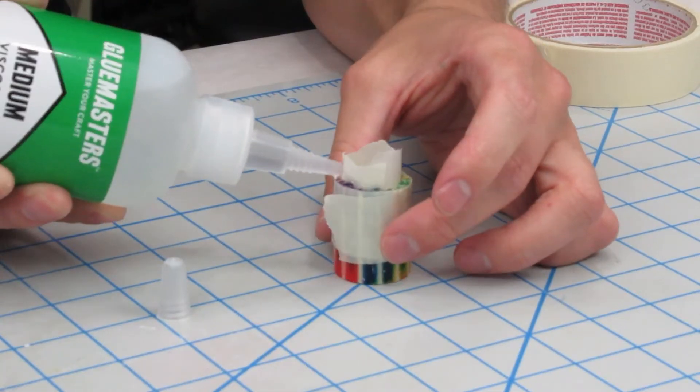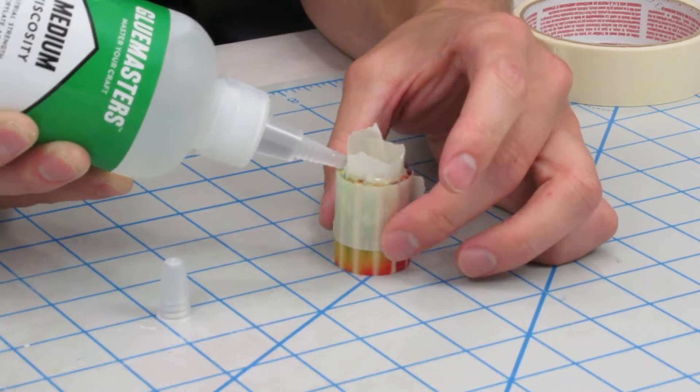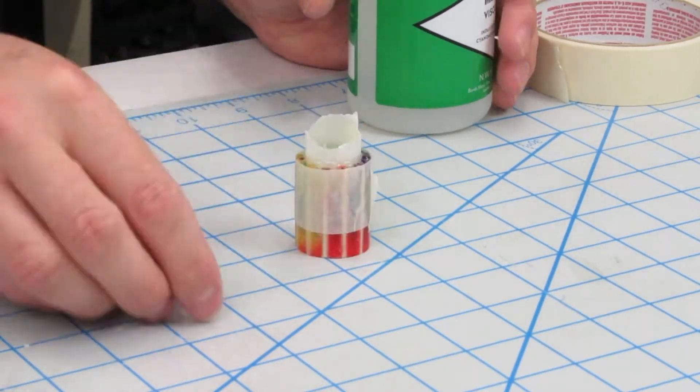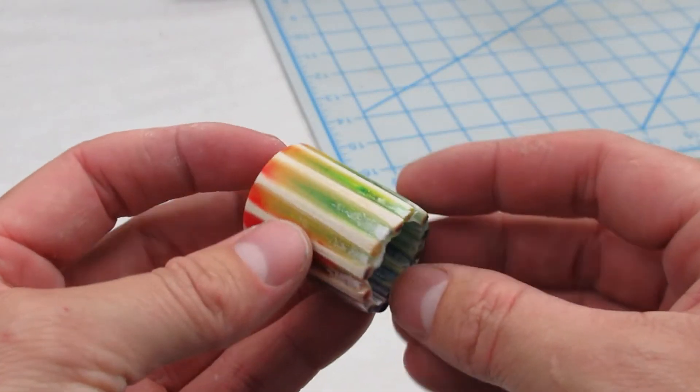And I will go ahead and top it off with some more super glue. It doesn't look the best, but this was more for strengthening the ring for sanding.